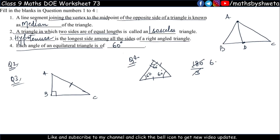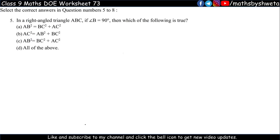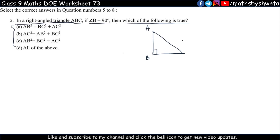Now question 5 — which of the following is true about Pythagoras theorem? Let's make a right-angle triangle. When angle B is 90 degrees, B is 90 degrees, with vertices A and C. By Pythagoras theorem: hypotenuse squared equals perpendicular squared plus base squared, that is AC² = AB² + BC². So the correct answer is option B: AC² = AB² + BC².